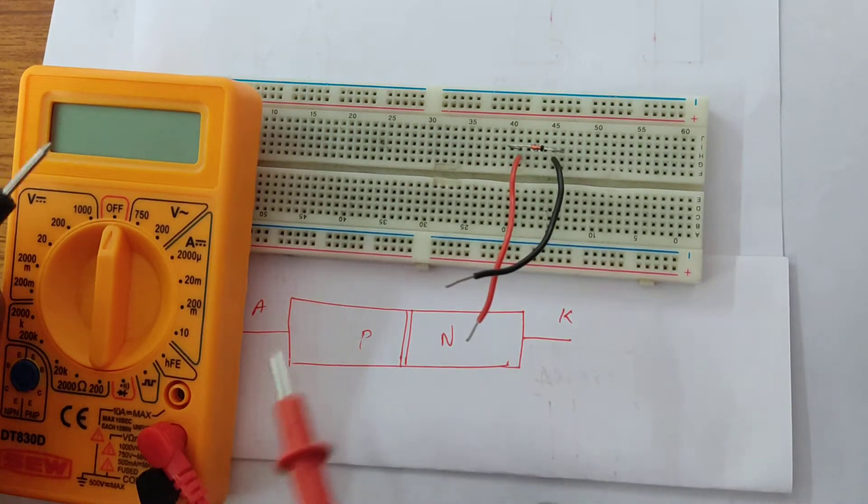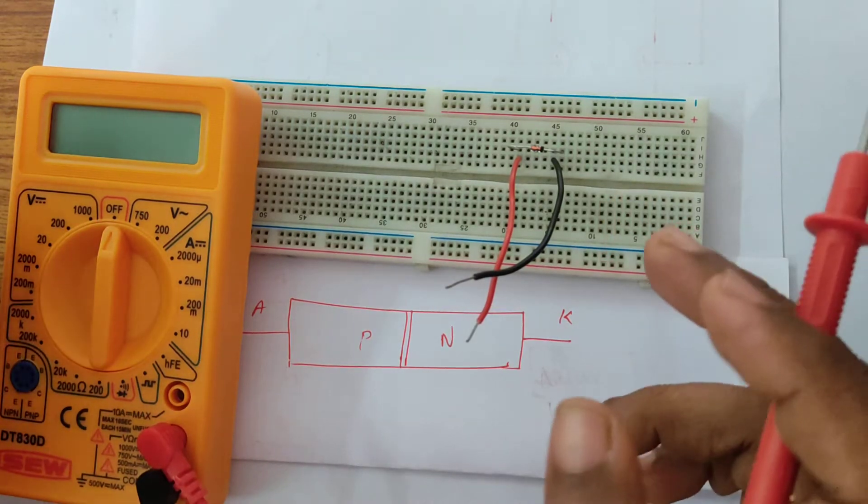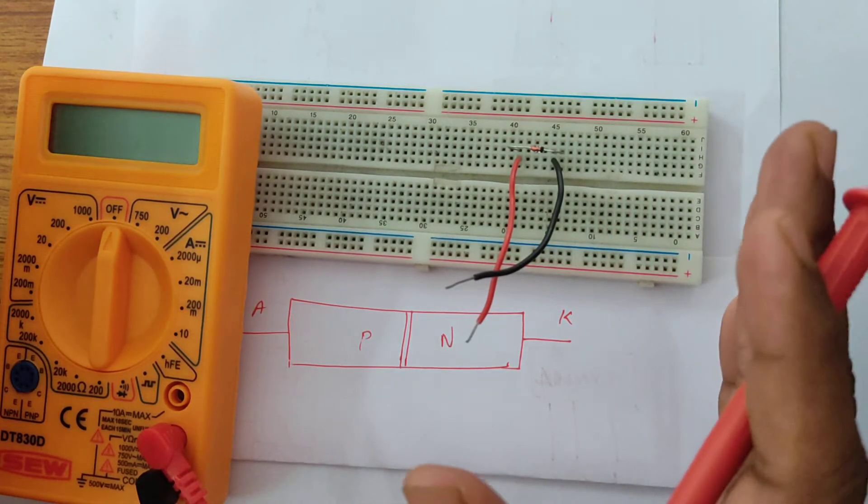The Zener and the PN junction diode are more or less the same. The only difference is that the Zener diode is going to conduct in the reverse bias.